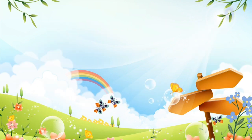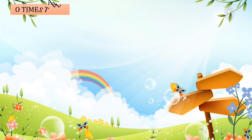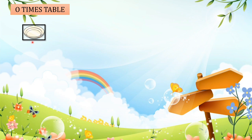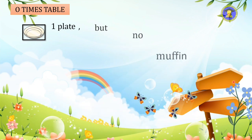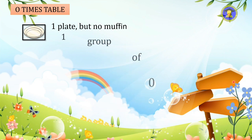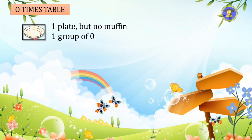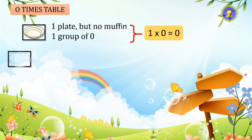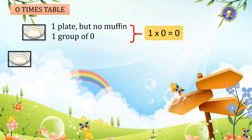Next we will look at the zero times table. We have one plate — one group — but do we see any muffin inside the plate? There is no muffin inside, but we still have one plate. We can say this is one group of zero, so the answer will be zero: one times zero equals zero.